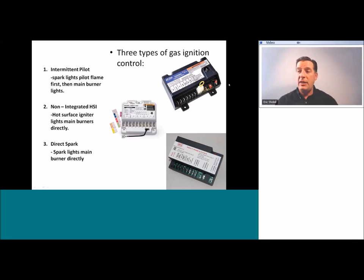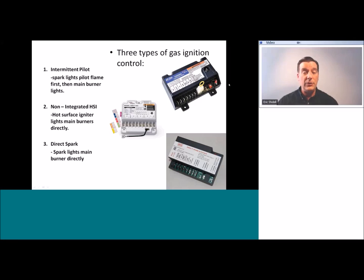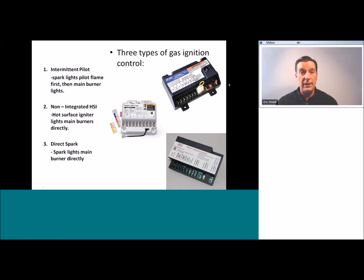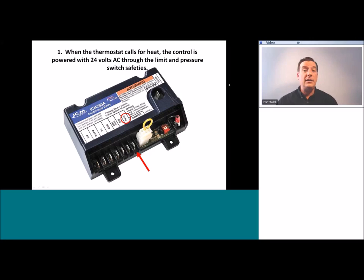There are three major kinds of gas ignition control. There's the intermittent pilot, just discussed. There is the non-integrated HSI, where a hot surface igniter lights the main burner directly with no pilot involved at all. And there is the direct spark controller, which is a little more rare, where a spark lights the main burners directly. Let's take a look at the intermittent pilot control.